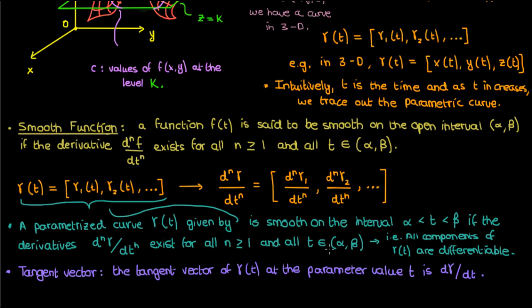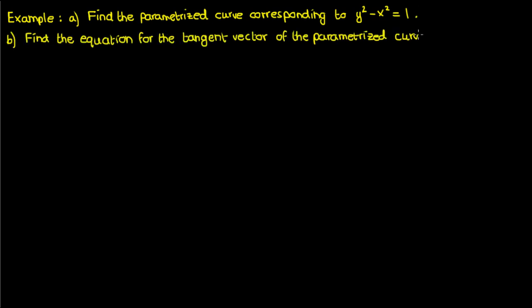A lot of this lesson has basically been a definition dump but now I'm going to change that and do a very quick example that should consolidate a bit of what we've learned so far. In this example we have to find the parametrized version of the level curve given by y squared minus x squared equals 1 so we basically have to convert a level curve to a parametrized curve. And then once we get the parametrized curve we need to find the tangent vector of that curve. So let's start with part a.